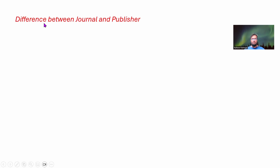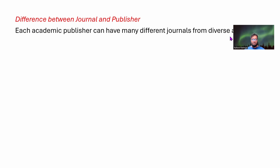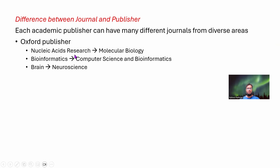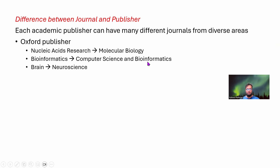The first thing we need to know is the difference between a journal and a publisher. Each academic publisher can have many different journals from diverse areas. For example, you have the Oxford publisher, and within that publisher we have the Nucleic Acid Research journal which deals with molecular biology research, the Bioinformatics journal that deals with computer science and bioinformatics research, and the Brain journal that deals with neuroscience.